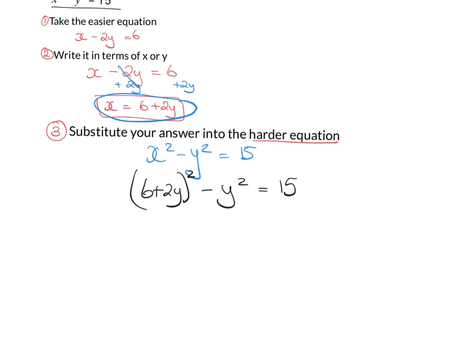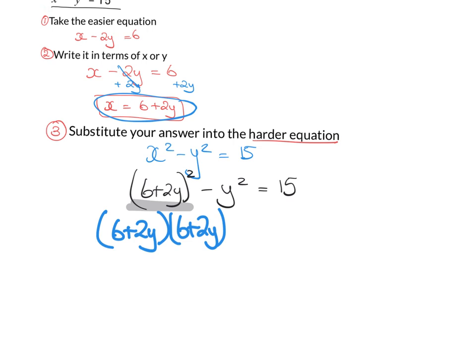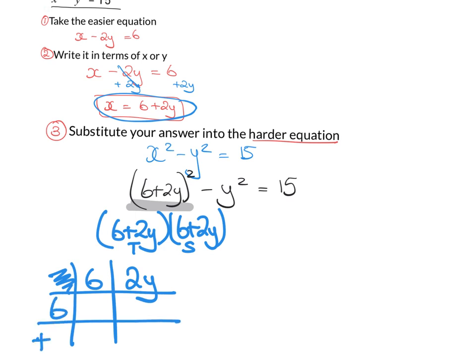So at this point I am going to have to do a little bit of working out. I'd hope you'd recognize that 6 plus 2y squared is actually 6 plus 2y by 6 plus 2y. So I'm going to work this out. I like to do this by box multiplication. So top and side. So I have a 6 on top and I have a 2y. And on the bottom, I have a 6 and a plus 2y.